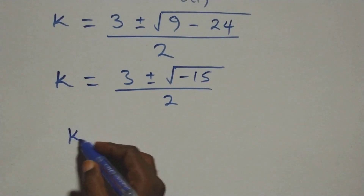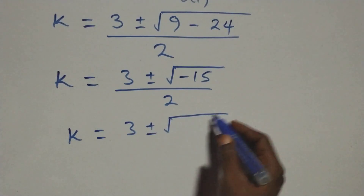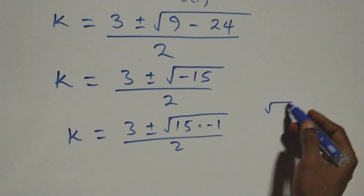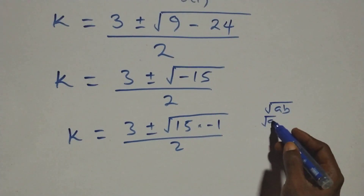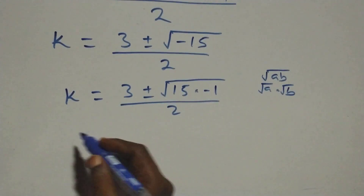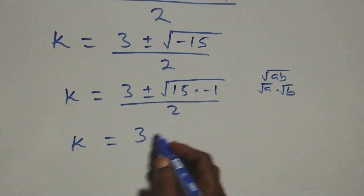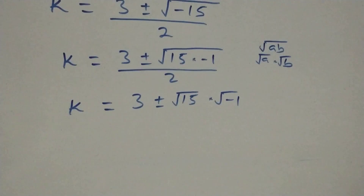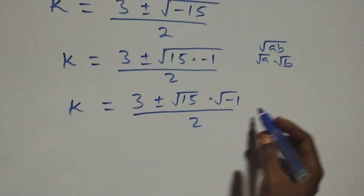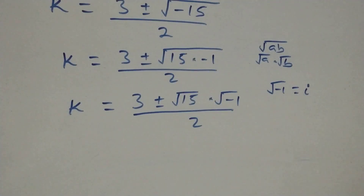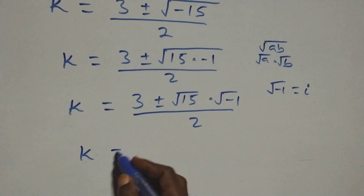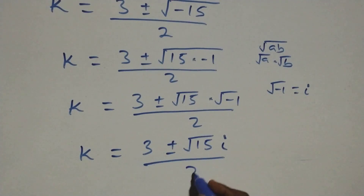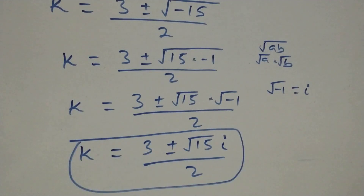This is the same thing as k equals 3 plus or minus square root of minus 15, all over 2. We separate this using root(a times b) equals root(a) times root(b). So we have k equals 3 plus or minus root 15 times root(minus 1), over 2. And root(minus 1) is the same as i. So k equals 3 plus or minus root(15) · i, over 2. This gives 2 complex solutions.